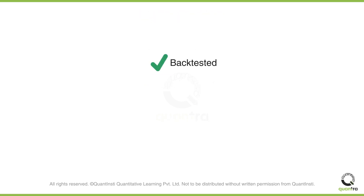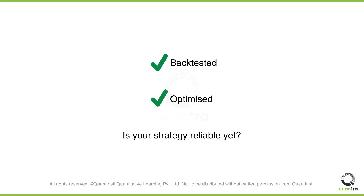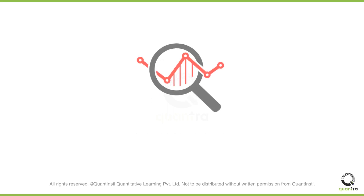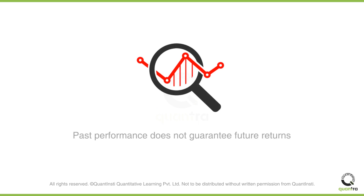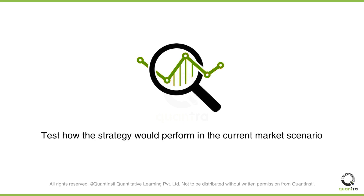So now you've backtested and optimized your strategy, but is it reliable yet? The answer is no, because past performance does not always guarantee future returns. So you need to test how well your strategy would perform in the current market scenario. This part of the process is called forward testing, or paper trading, and it is the last step of the process.